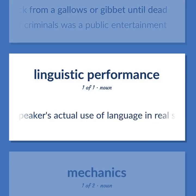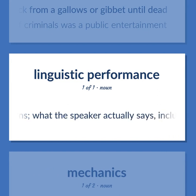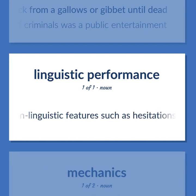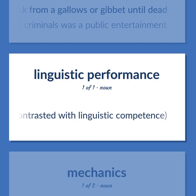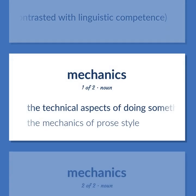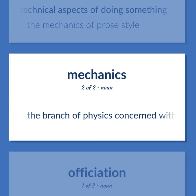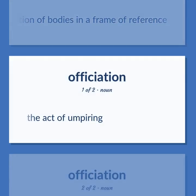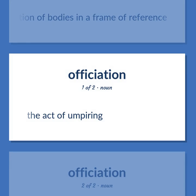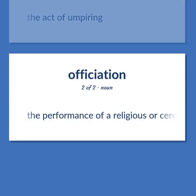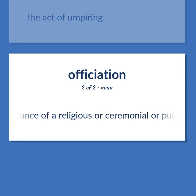Linguistics: A speaker's actual use of language in real situations — what the speaker actually says, including grammatical errors and other non-linguistic features such as hesitations and other disfluencies, contrasted with linguistic competence. The technical aspects of doing something — the mechanics of prose style. The branch of physics concerned with the motion of bodies in a frame of reference. The act of umpiring. The performance of a religious, ceremonial, or public duty.